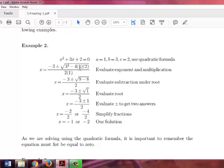To simplify this, we'll start with what's inside the square root. 3² is 9. 4 times 1 times 2 equals 8. So we have 9 minus 8, which is 1. The square root of 1 is 1. So now we have -3 ± 1 divided by 2.